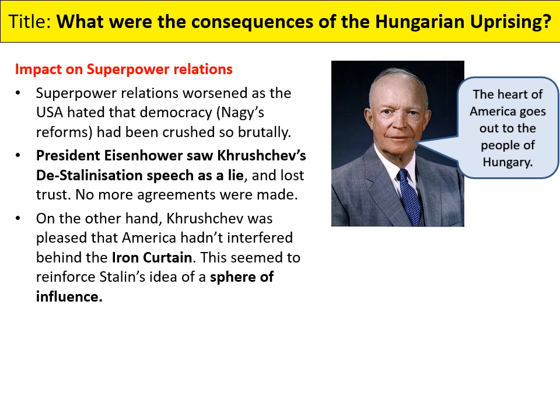In terms of the consequences for superpower relations and the wider Cold War, this obviously worsened relations. America saw that democracy — or at least Nagy's small attempts at democracy — had been ruthlessly crushed. President Eisenhower saw Khrushchev's de-Stalinisation speech as a lie. In fairness to Khrushchev, you can hold both de-Stalinisation and a willingness to ruthlessly crush any democracy. The problem was the West had taken the secret speech to mean Khrushchev was opening up the East — but that's not what he was saying. He was saying Stalin went too far, not that he was happy for democracy. It's a weird thing in the Cold War course where you end up defending these awful communist dictators, because a lot of the time the West were taking things as they shouldn't.